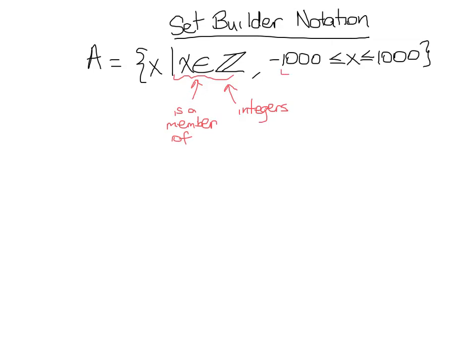and then over here, our notation tells us where the values are. It tells us that the values are between negative 1,000 and 1,000, and because we have or symbols here, the or equal to symbol here, that means it also includes negative 1,000 and it includes 1,000.